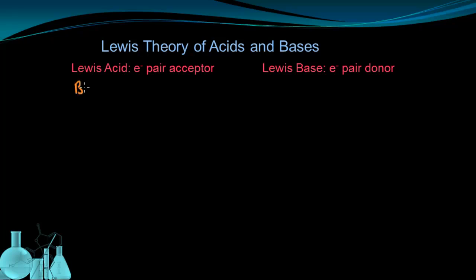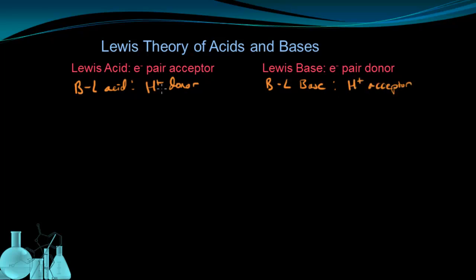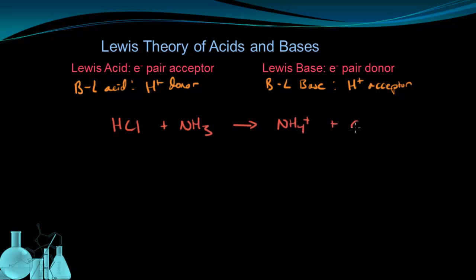We'll start by comparing the Lewis theory to the Bronsted-Lowry acid and base. The Bronsted-Lowry acid is a proton donor, whereas the Bronsted-Lowry base is a proton acceptor. You may start to see how this is simply looking at the same thing from a different perspective — in one case I'm donating a positive ion away, and from the other perspective I'm accepting a negative electron pair. Let's look at HCl reacting directly with NH3. Independently, we've shown these are both acids and bases, and when they react together, they form the ammonium ion and the chloride ion.